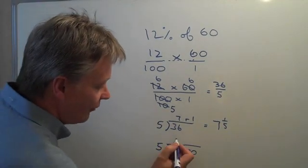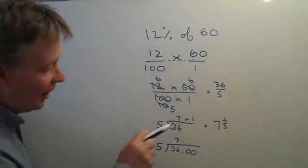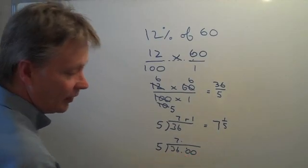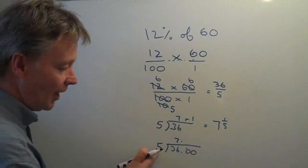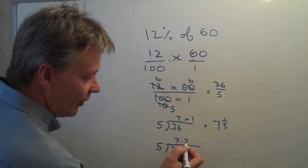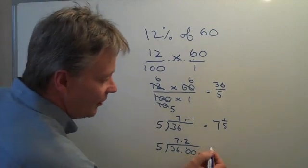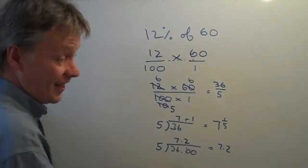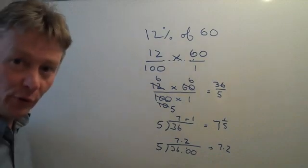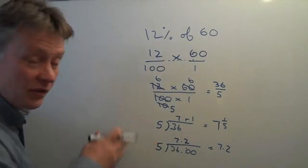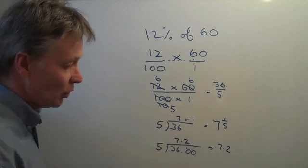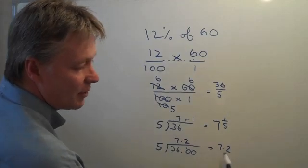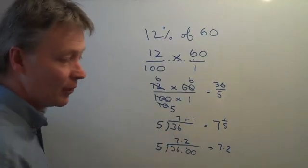As I mentioned before, I have 1 left over. But this time, rather than making it 1 fifth, I'm going to carry that 1 over. The same question is: how many lots of 5 are there in 10? There are 2. So the answer to 12% of 60 is either, as a fraction, 7 and 1 fifth, or as a decimal, 7.2. You can see that 1 fifth is exactly the same as 0.2 as a decimal — both numbers are exactly the same.